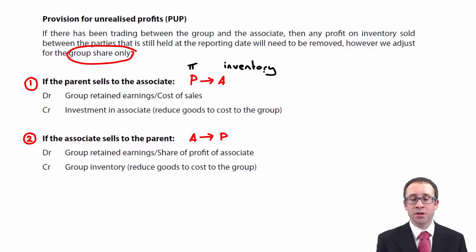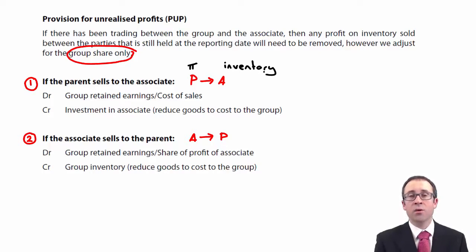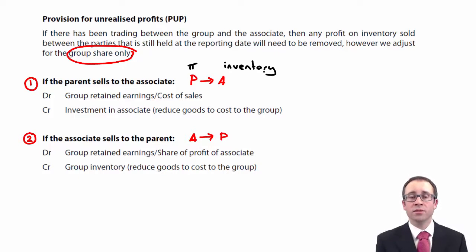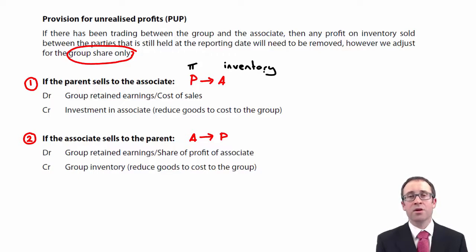The investment in the associate is credited, and the parent has the profits, so the group retained earnings are what we would debit. But if we need to be specific within the statement of profit or loss, we have consolidated the parent's cost of sales, so we will debit the cost of sales of the parent.